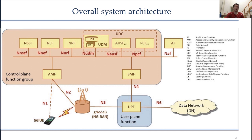In NR, there are two modes — probably you've heard about them: standalone and non-standalone, referred to as SA and NSA. Currently in 2021, the 5G that we have is the non-standalone mode. In non-standalone mode, LTE and EPC handle functionality like connection setup and paging. In later releases, standalone operation will be introduced, with NR connecting to the 5G core, as well as LTE connected to the 5G core.